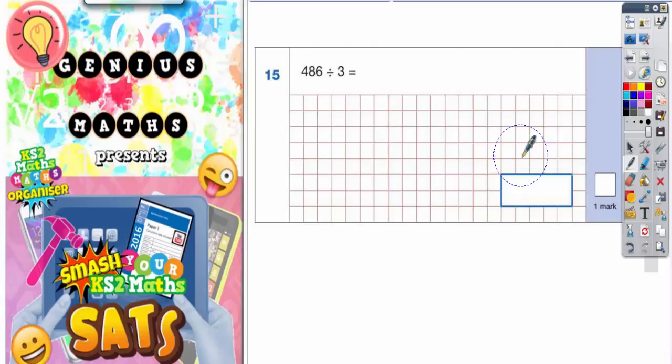Question 15, we've got 486 divided by 3. Easiest thing to do is a bus shelter, so 486 divided by 3. We start with the 4 and say how many threes go into 4? Well, we can get one lot of 3 inside 4, but there would be one remainder, so carry the one to make 18 into the next column.